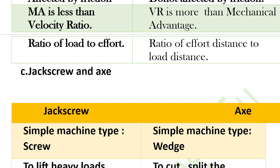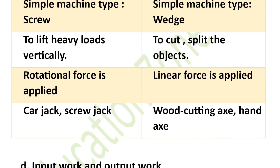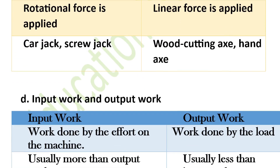The difference between jack screw and wedge — these are examples of simple machines. Jack screw is used to lift heavy loads vertically; wedge is used to cut or split objects. For jack screw, a rotational force is applied; for wedge, a linear force is applied. Examples of jack screw: car jack. Examples of wedge: wood-cutting axe, hand axe.